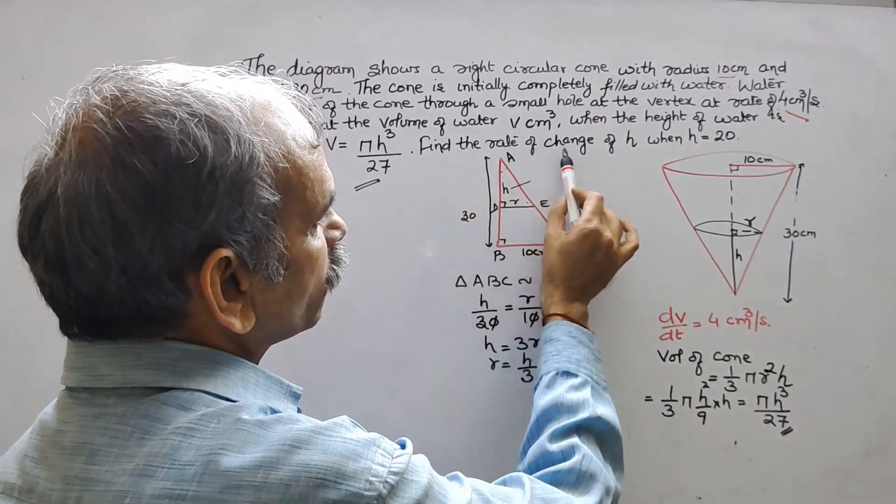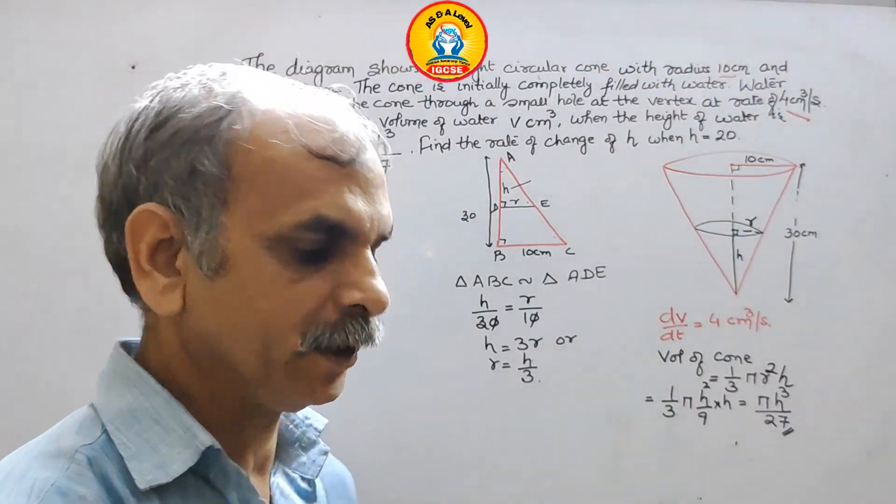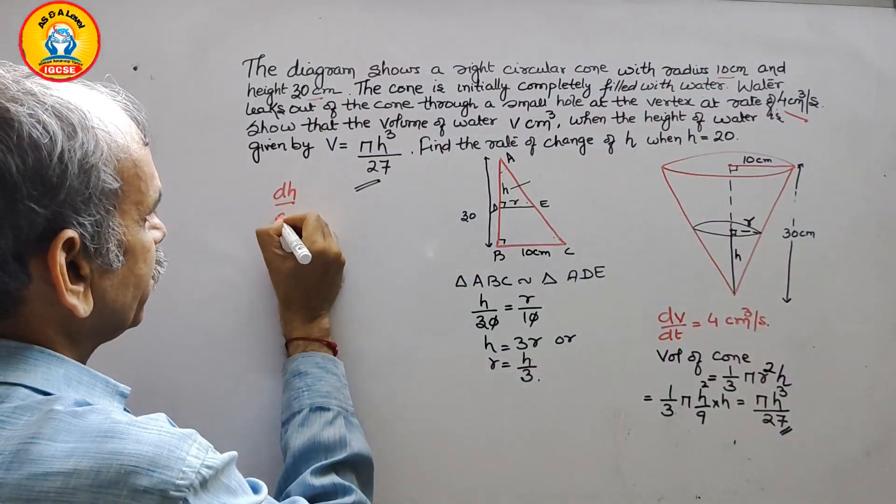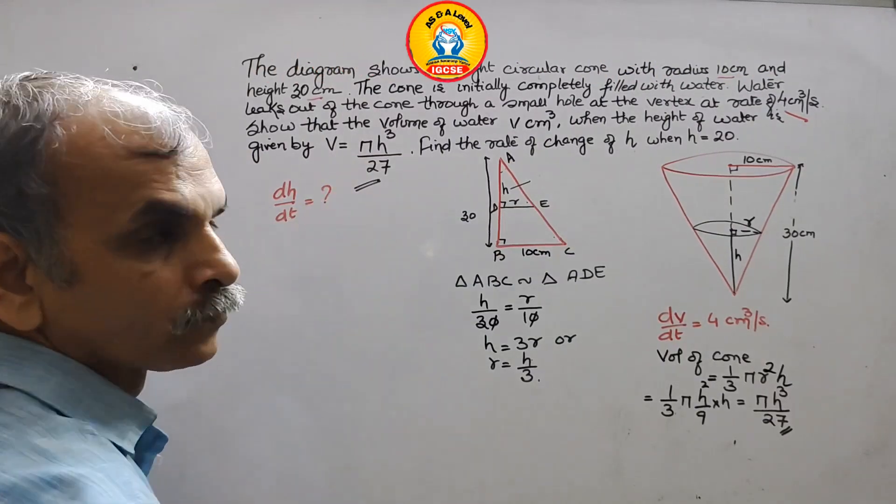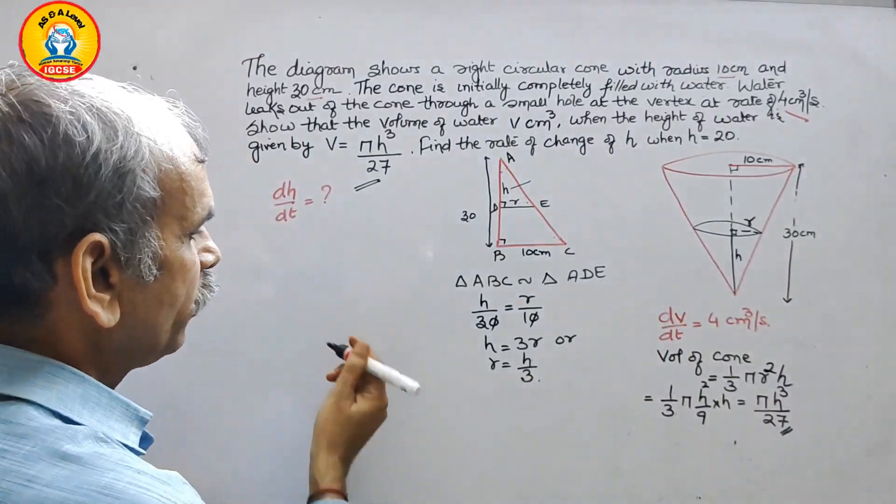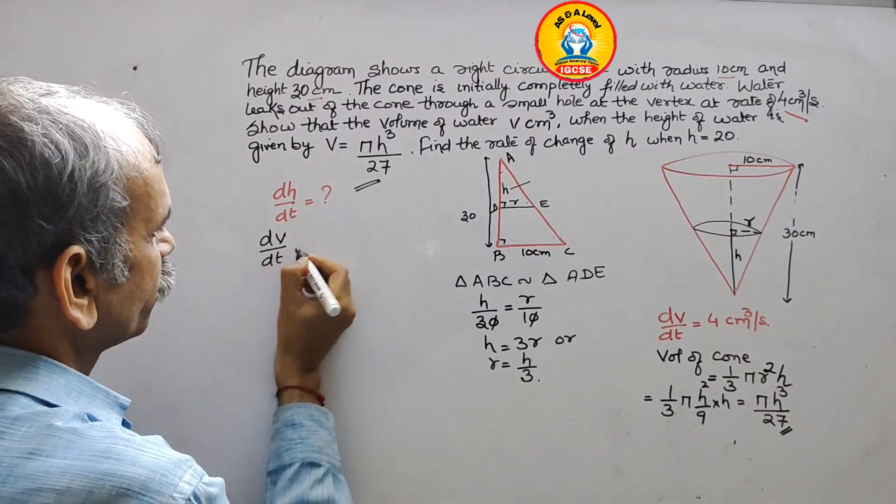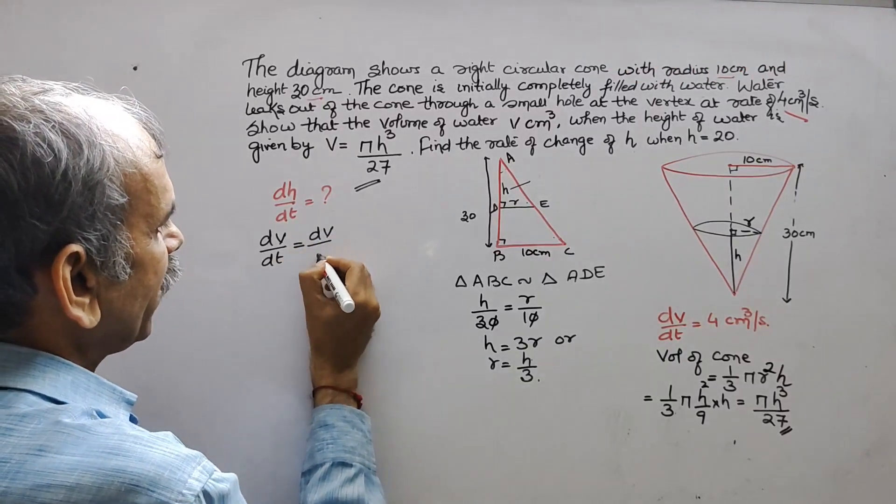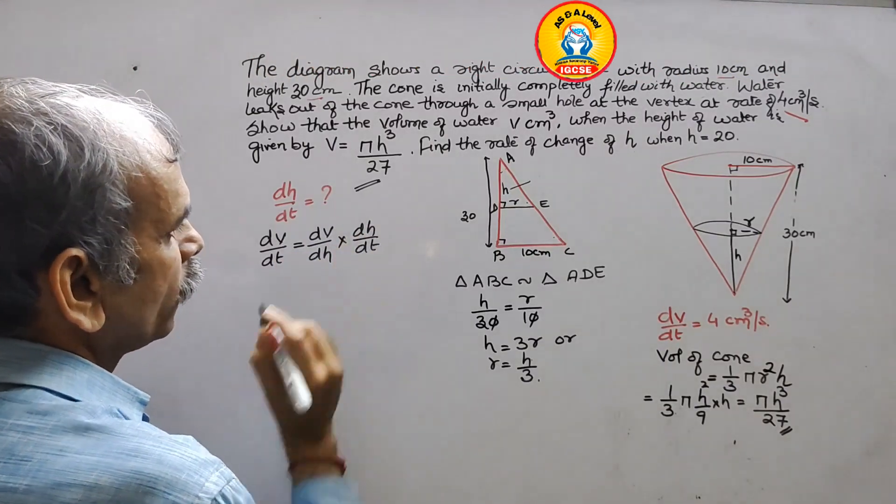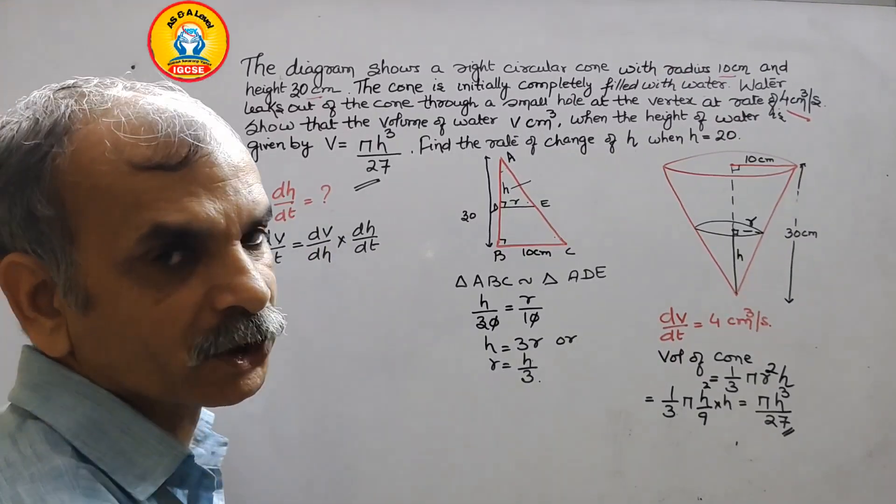Next, they have told find the rate of change of h. That means we have to find it out dh/dt. dh/dt is what? So how we will find it out? Just we will go for a formula. What is that? dv/dt = dv/dh × dh/dt. That means we have to differentiate dv/dh.